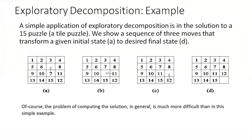One example of exploratory decomposition is the 15-puzzle problem. The 15-puzzle consists of 15 tiles numbered 1 to 15 and one blank tile placed in a 4x4 grid. A tile can be moved into the blank position from an adjacent position, thus creating a blank in that single position. Depending on the configuration of the grid, up to 4 moves are possible: up, down, left, and right. The initial and final configurations of the tiles are specified, and the objective is to determine the sequence of moves that transforms the initial configuration to the final configuration, as shown in this figure.